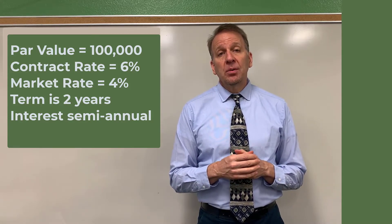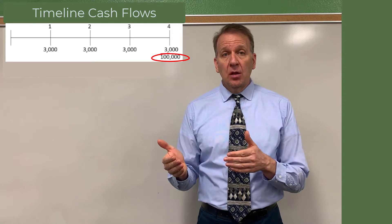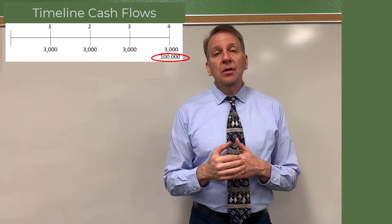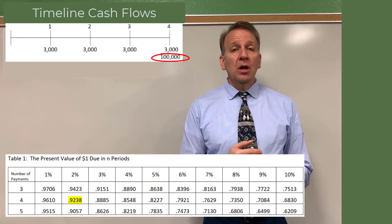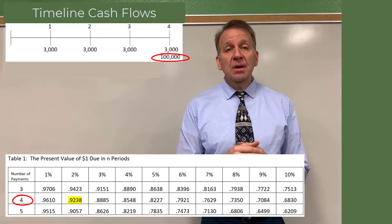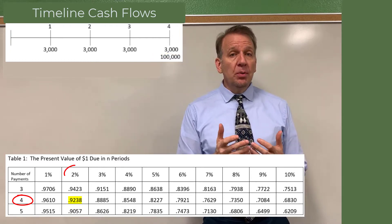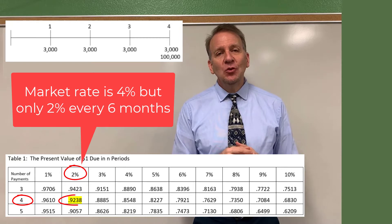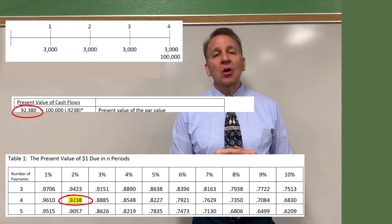First, we'll take the hundred thousand dollars, because at the end we have to pay back a hundred thousand dollars no matter what price we sell it for. We need to discount this back to the present, so we go to Table 1, which is the present value of a single dollar amount. We go down four periods — this is a semi-annual bond over two years, so that's four periods — and across at two percent, which is the market rate. We get a factor of 0.9238. So a hundred thousand times 0.9238 gives us ninety-two thousand three hundred and eighty dollars.